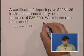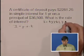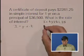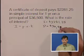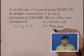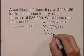we know that the interest is $2,281.25. We know that the principal is $36,500. We know that we don't know the rate, that's what we want to know. And we know that the time is one year.